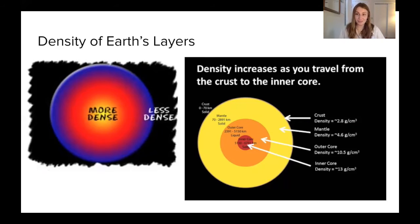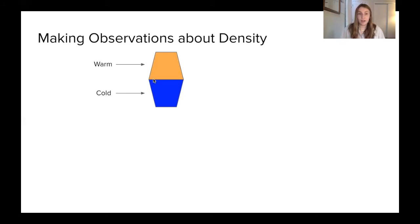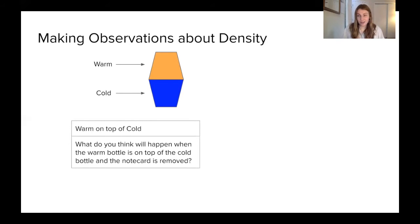Temperature can also affect density, and we're going to explore this in another lab. We're going to have two different systems set up with two jars, one on top of the other. In both systems we're going to have yellow warm water and cold blue water. In one situation, we'll have the jar with warm water on top and cold water on the bottom. In the other, cold water will be on top of warm water. There'll be a note card between the two jars to start, separating the water, and we'll observe what happens when it's removed.